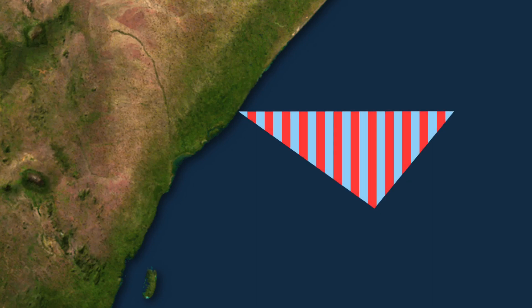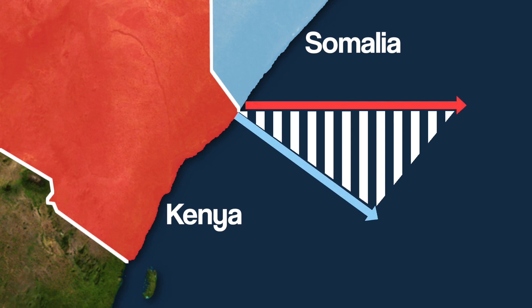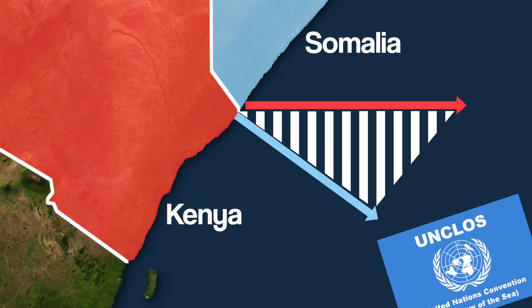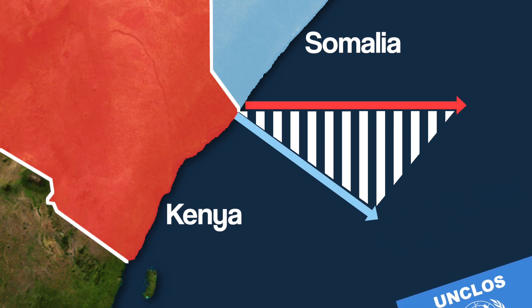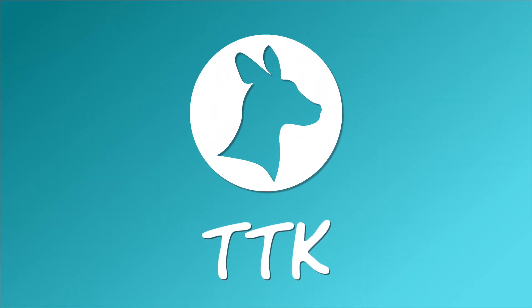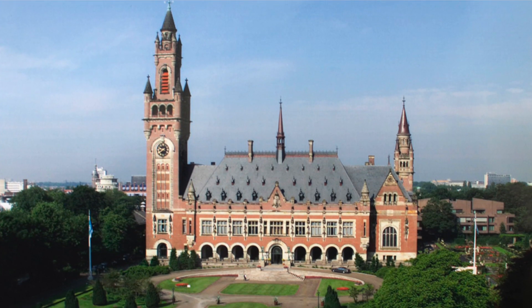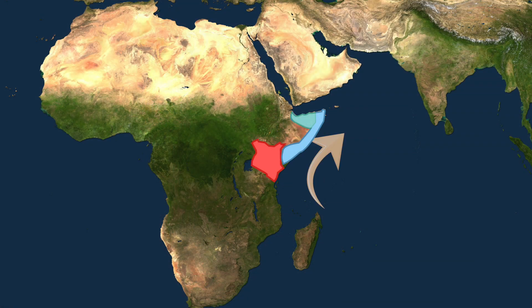You might have seen this map, which shows a disputed area of ocean claimed by both Kenya and Somalia. But how can there be this much difference in what these two countries are claiming? And isn't there some kind of convention that gives us rules to avoid this sort of thing? In 2020, the International Court of Justice is set to hear a case brought by Somalia, which relates to this dispute on the east coast of Africa.